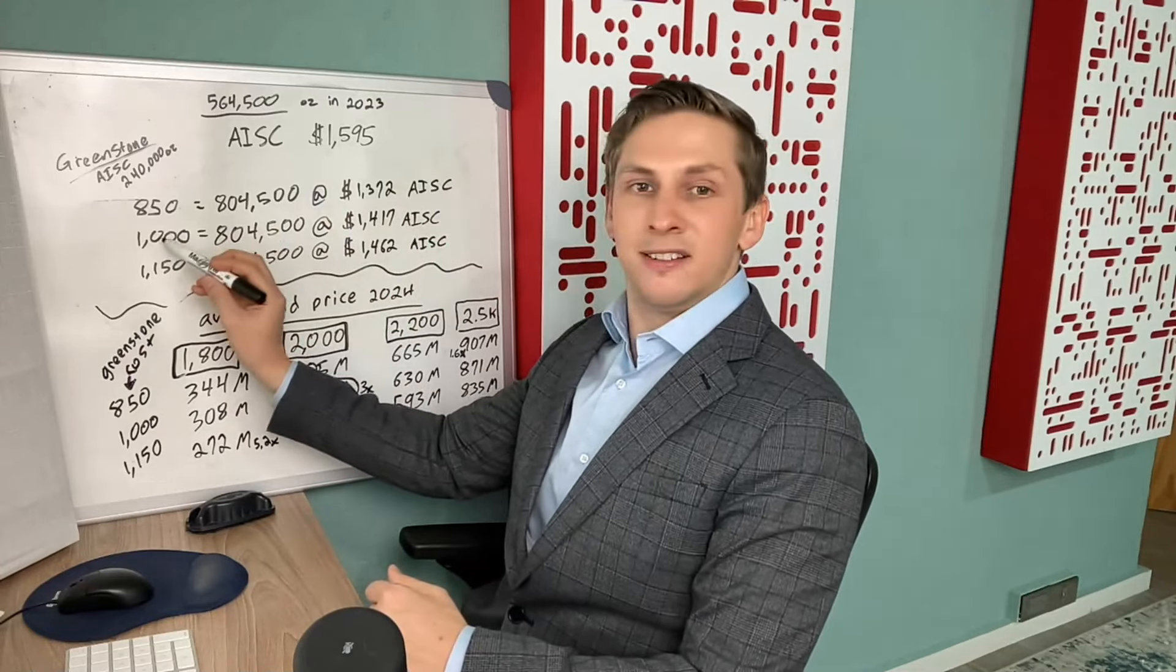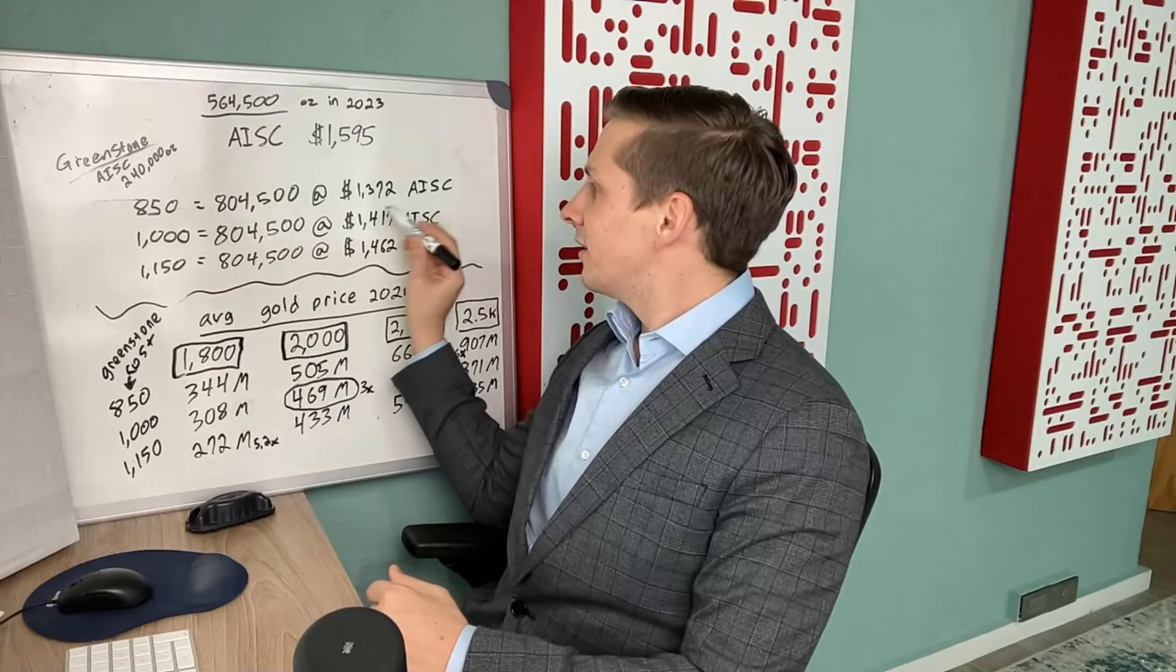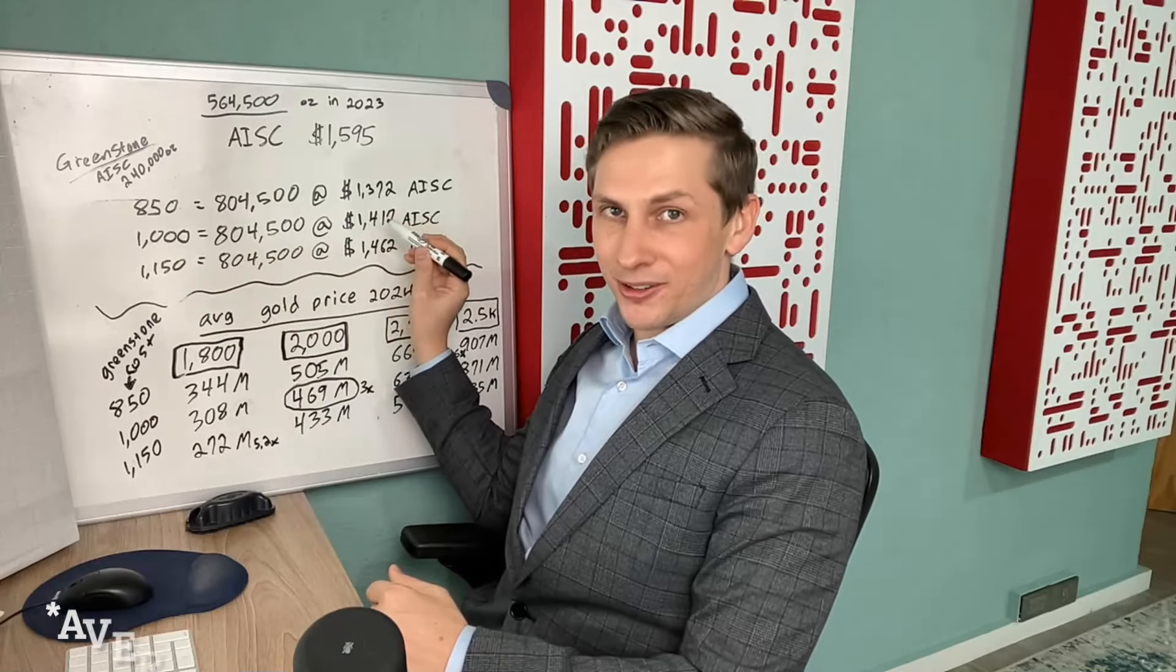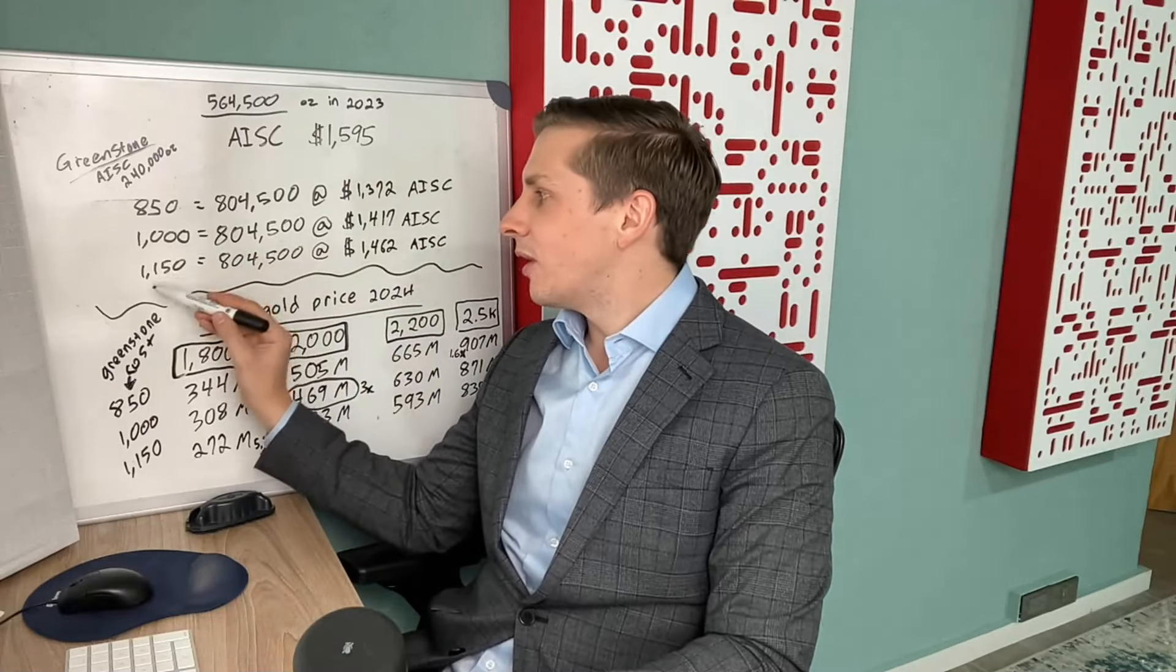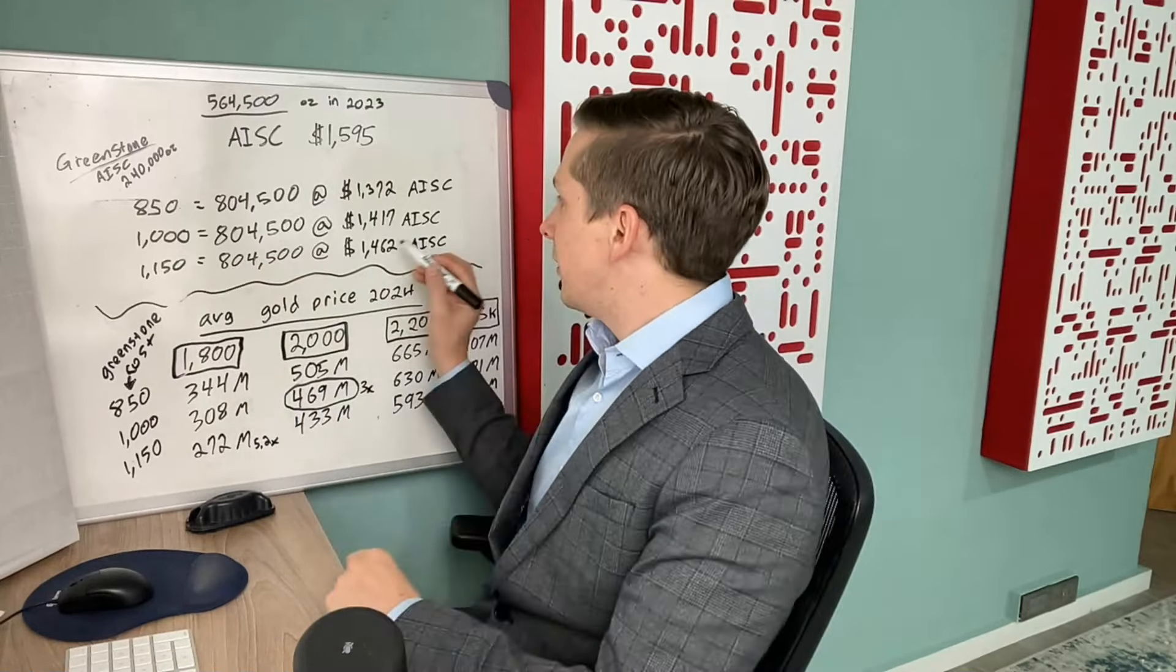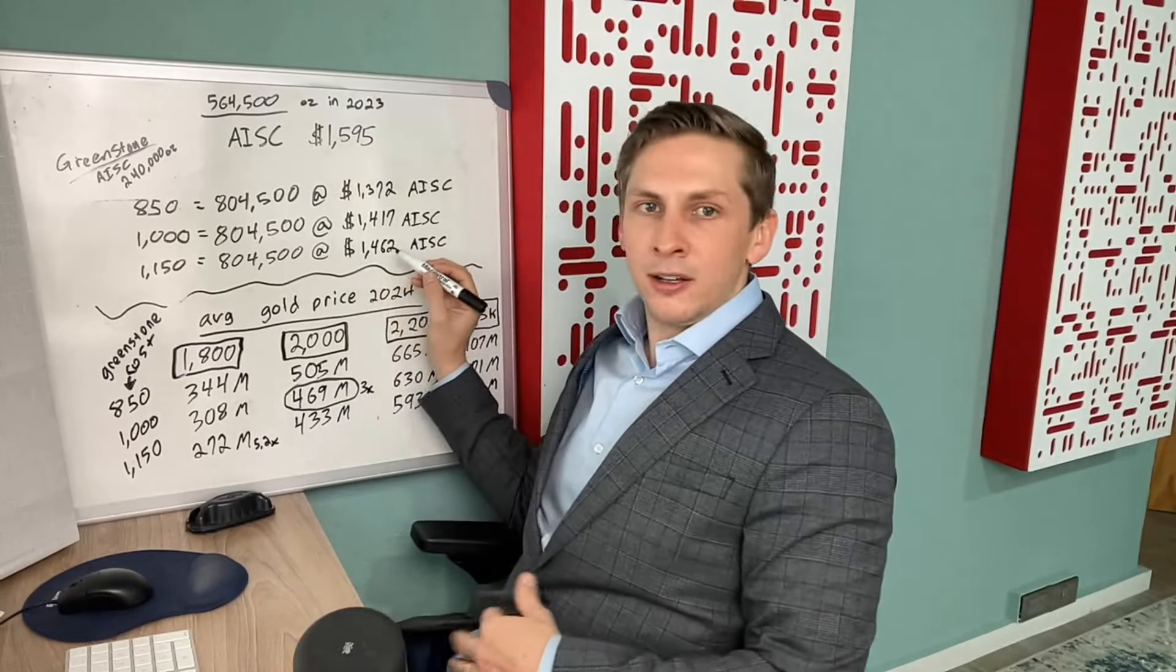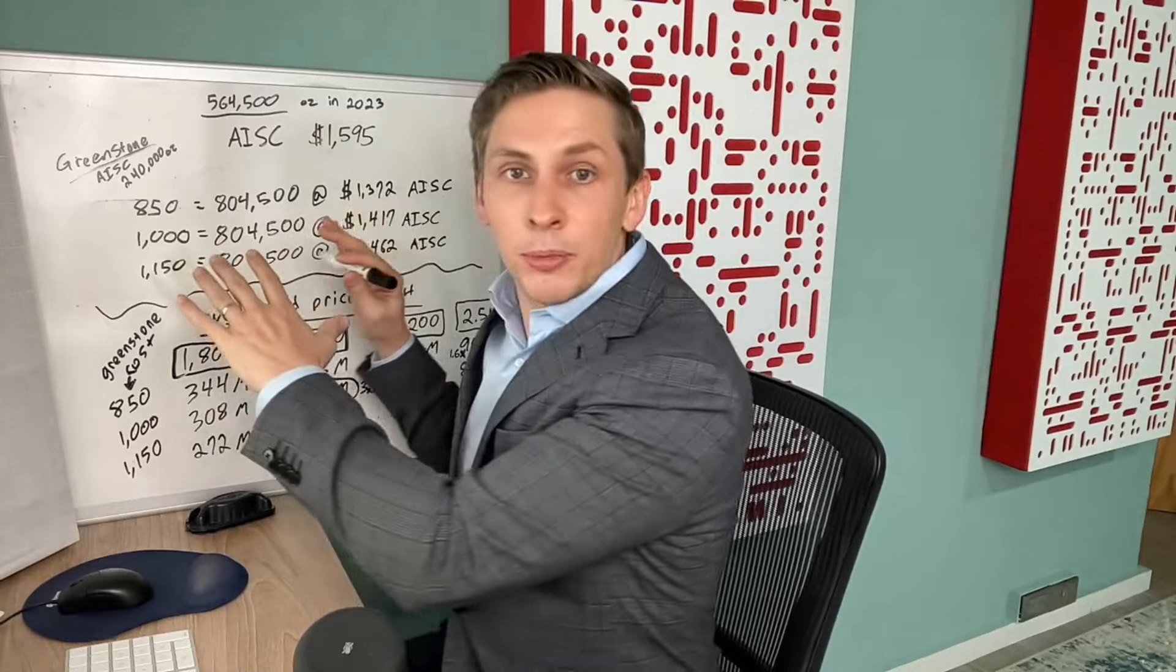If the Greenstone mine is producing at $1,000 an ounce, the company would be making approximately $600 per ounce. Here I have the worst case scenario where the Greenstone mine comes in producing at an all-in sustaining cost of $1,150 an ounce. That brings the company-wide AISC to $1,462.